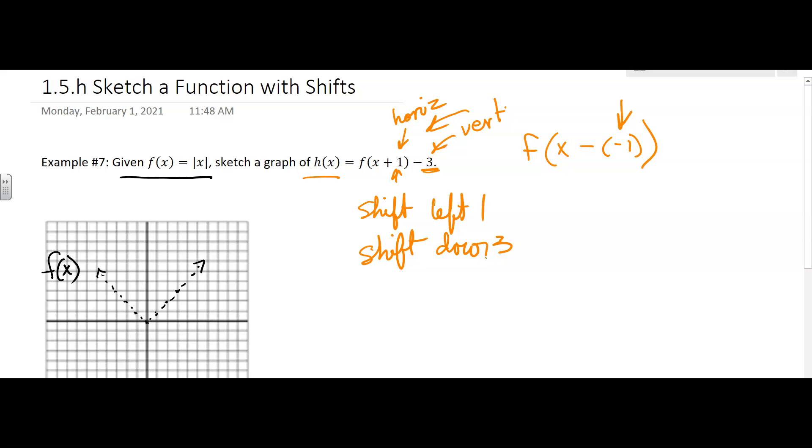It's supposed to say down. Okay, down three units. So you look at the function that they give you that you're trying to graph, and you determine, okay, is there a vertical shift, is there a horizontal shift, how much, which direction?